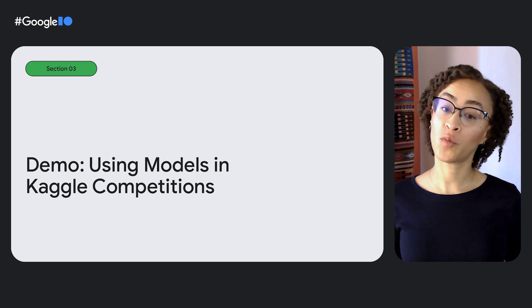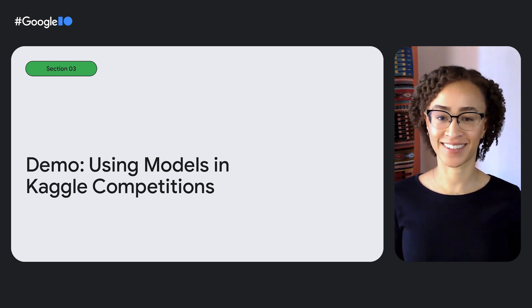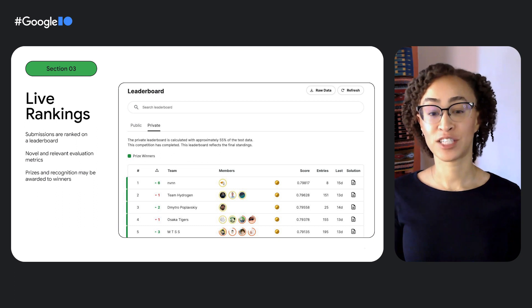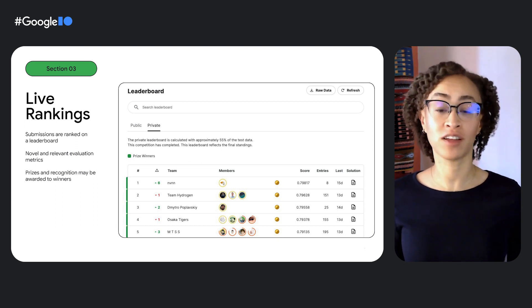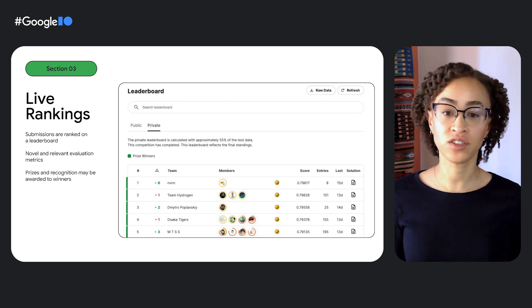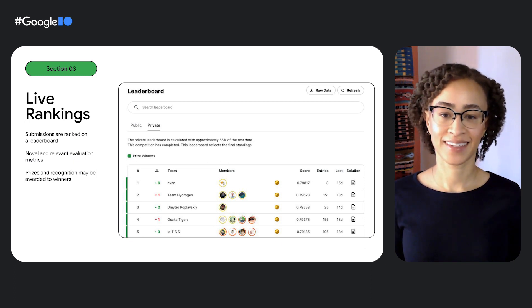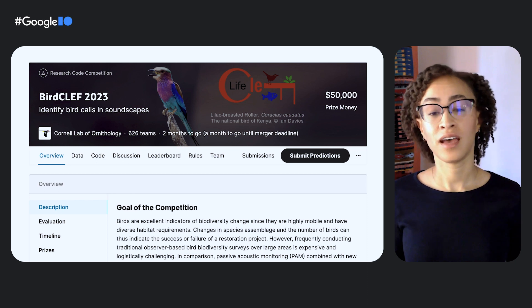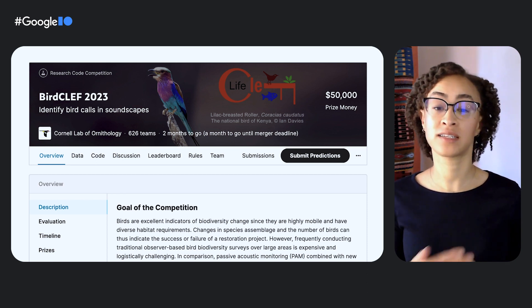Now we'll walk through a demo to show how to find an open-source model and use it to generate a submission to a Kaggle competition. Kaggle competitions are live machine learning problems. They range from traditional supervised learning to problems involving generative and large models, to reinforcement learning problems in simulated worlds. Submissions are ranked on a leaderboard using relevant and sometimes novel evaluation metrics, and winners can be awarded recognition or even prizes — while advancing the state-of-the-art in areas as diverse as whale tracking, sign language translation, and medical imaging. Today we'll be working with data from the competition called BirdCLEF. The goal is to advance the state-of-the-art for identifying bird species by sound, focusing on East African bird species, with winning solutions used to support efforts to protect avian biodiversity in Africa.